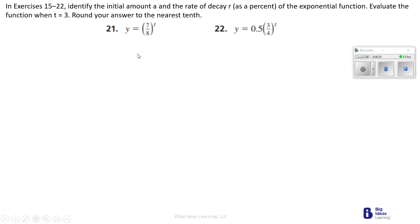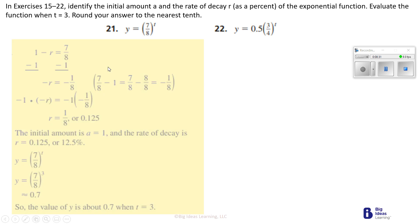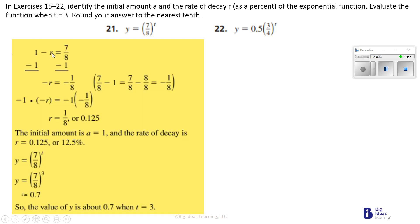Remember, number 20 was yours to do. Number 21 says T is to the third power. We've got 1 minus R equals 7 over 8. Subtracting 1 gives negative R equals negative 1 over 8. So R equals 1/8, and 1 divided by 8 is 0.125 — that's a rate of decay of 12.5%. Using our formula, 7/8 to the third power is about 0.7. So the value of Y is about 0.7.